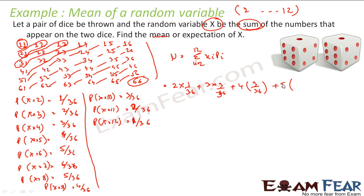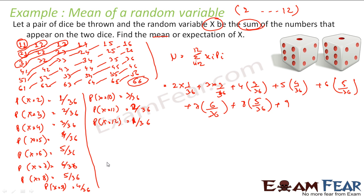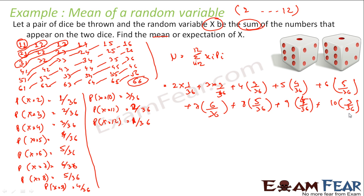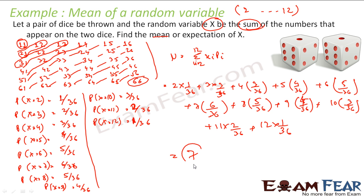Continuing: i=5 times 4/36, plus i=6 times 5/36, plus i=7 times 6/36, plus i=8 times 5/36, plus i=9 times 4/36, plus i=10 times 3/36, plus i=11 times 2/36, plus i=12 times 1/36. When you add all these, you get 7. So the mean of x is 7.